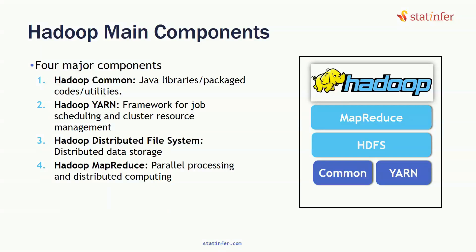This Hadoop platform has four major components. The first one is Hadoop Common Libraries. Hadoop is a software platform or software package which has common Java libraries — compiled codes that will automatically take care of data distribution, work scheduling, and all these things. Hadoop is written on the Java platform, so these are Java libraries, packaged codes or utilities.